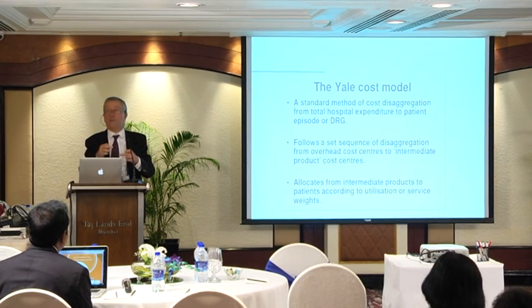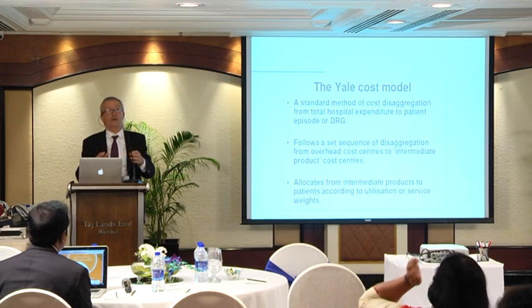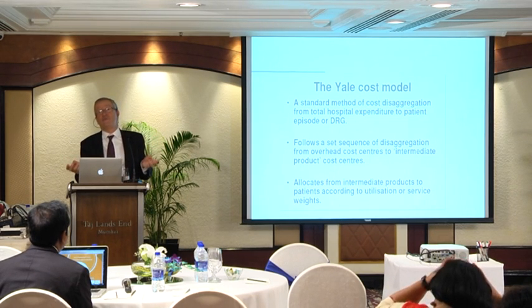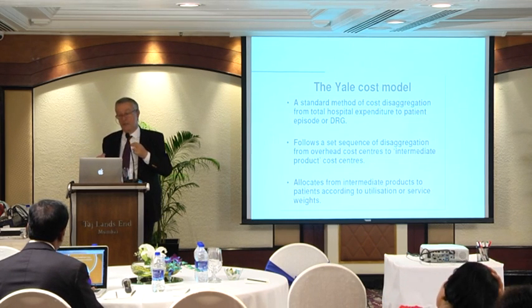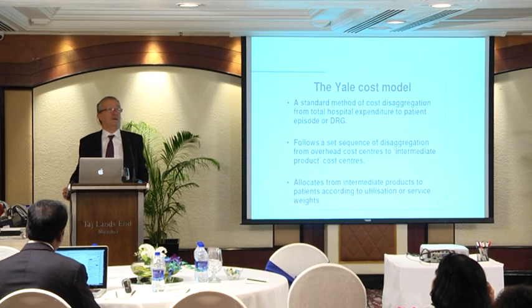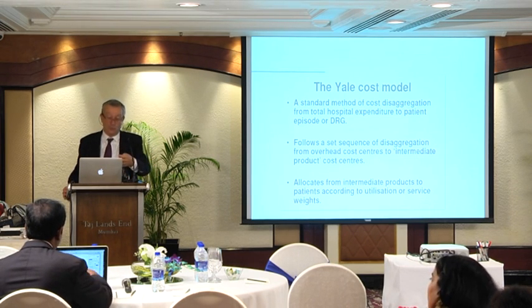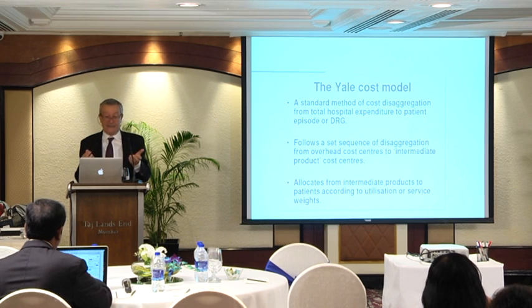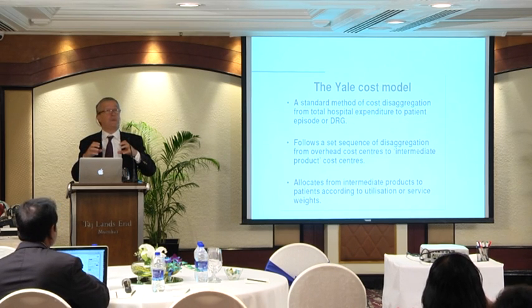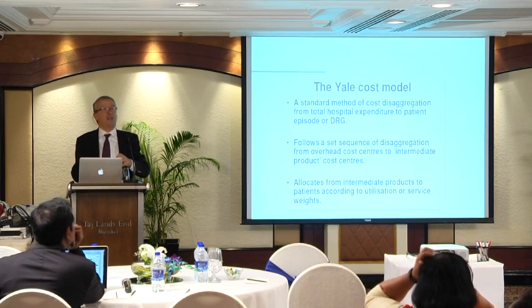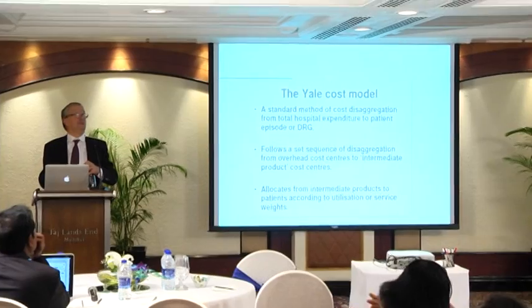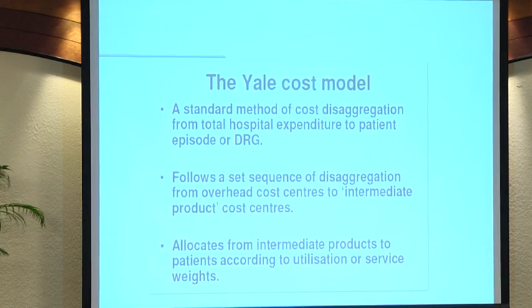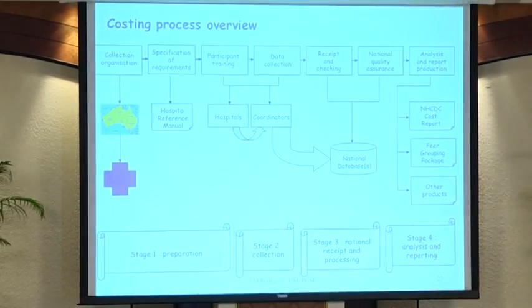If you are able to relate the DRG group to a department of a hospital, you can do benchmarking, but only for instance with length of stay. If you wish to have real economic information, you need to use the so-called Yale cost model, which is a method of disaggregating total hospital expenditure to be able to say this patient has consumed this portion of the amount. And it is not so easy.